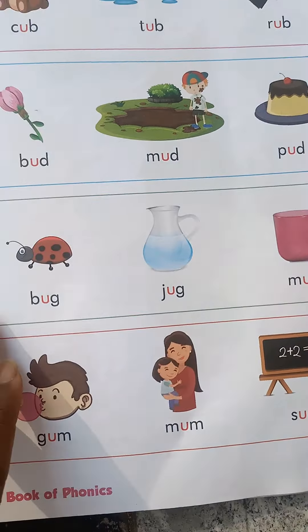Other words with UN: B-UN, bun; F-UN, fun; S-UN, sun. UP words: up, C-UP, cup; P-UP, pup. Other words with UT: H-UT, hut; C-UT, cut; N-UT, nut.